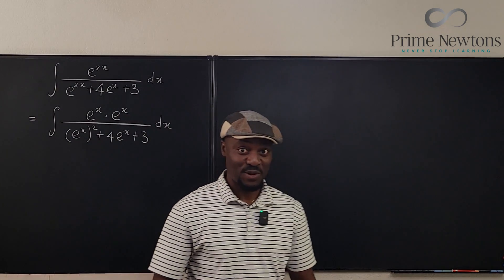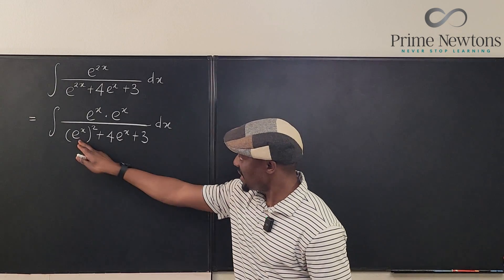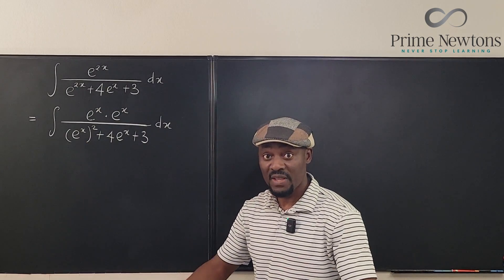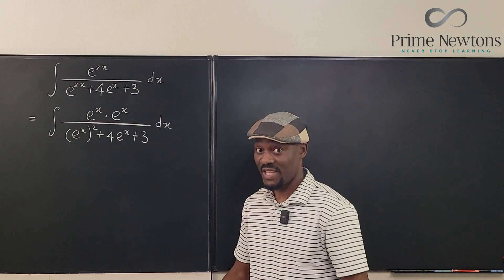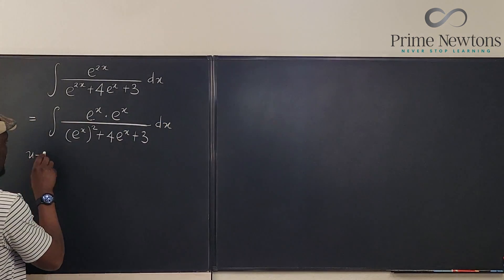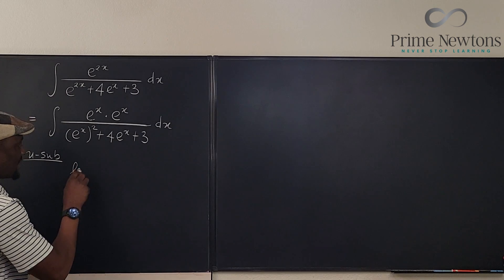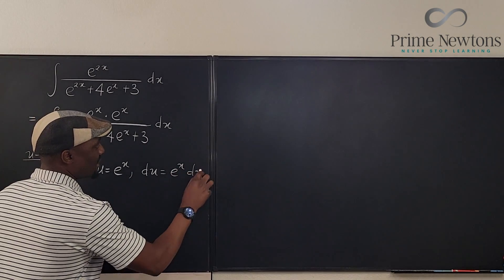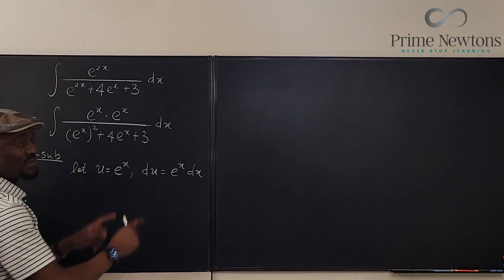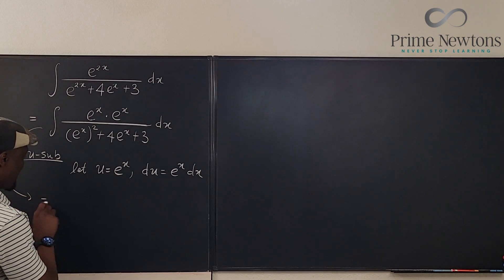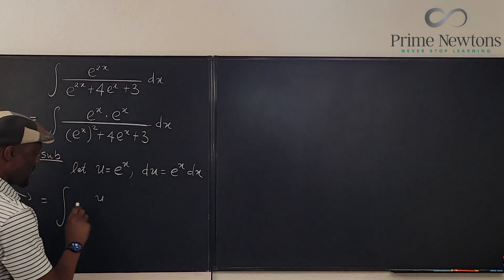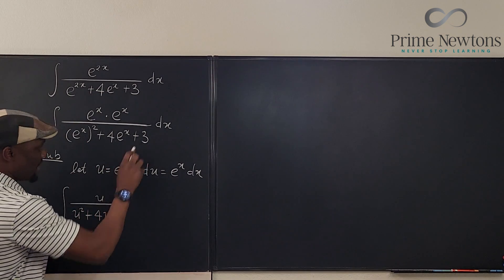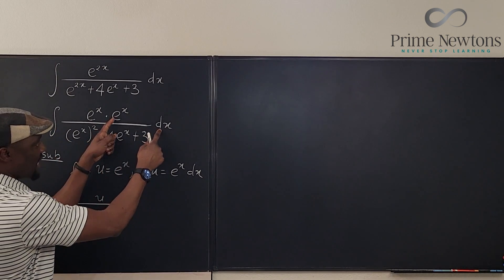Now it's easier to see. If we let u equal e to the x, we can replace all e to the x's with u. The derivative of e to the x is e to the x dx, so du equals e to the x dx. Our integral becomes the integral of u over u squared plus 4u plus 3, du.